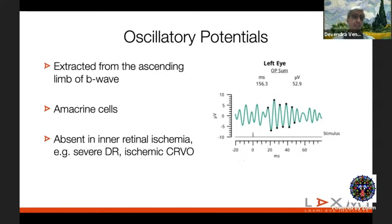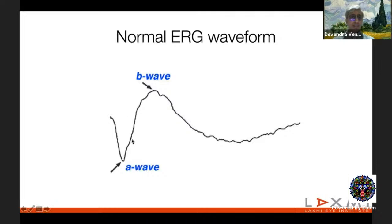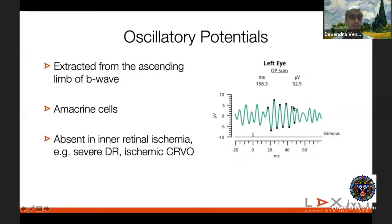Oscillatory potentials are extracted from the ascending limb of the b-wave. When the b-wave is magnified and amplified, small wavelets are seen, derived from amacrine cells. These are absent in inner retinal disorders or inner retinal ischemia, especially in severe diabetic retinopathy or ischemic CRVO.